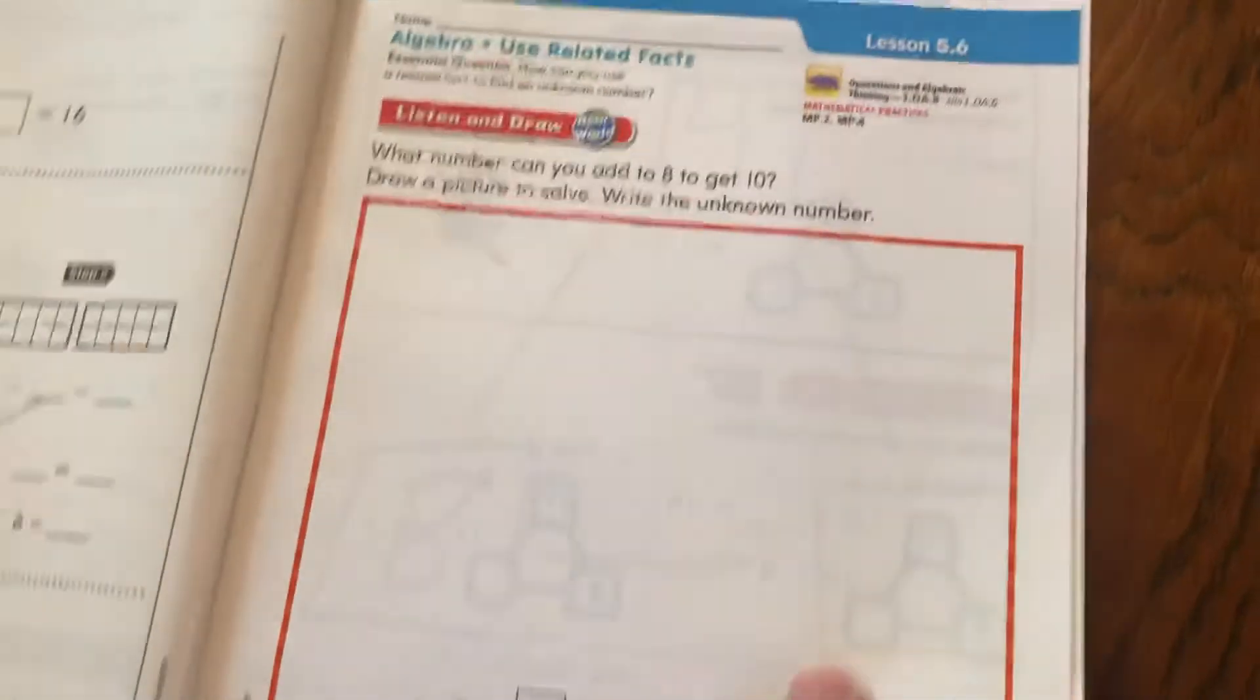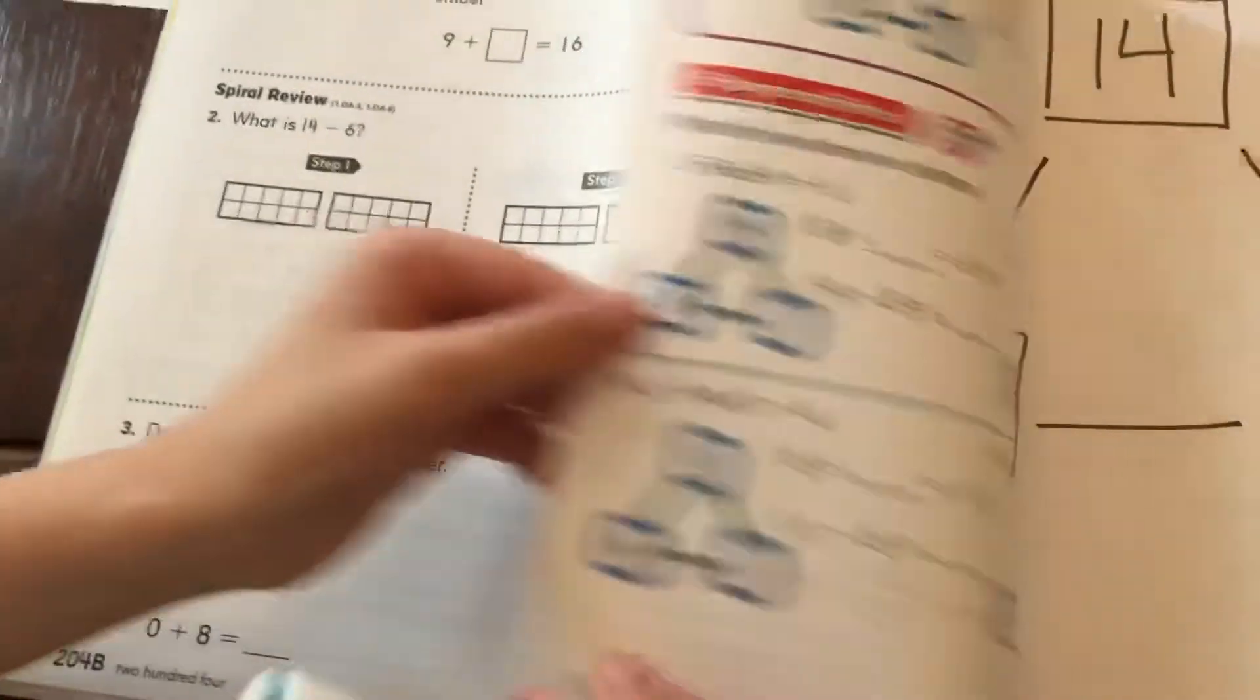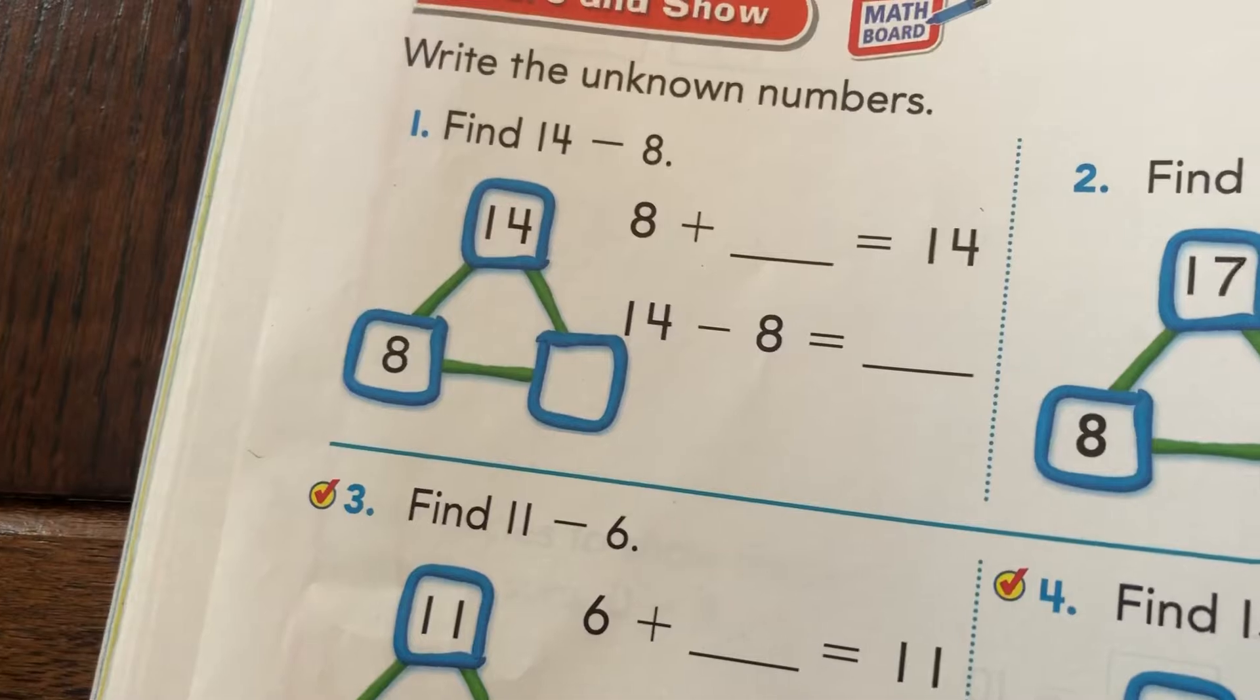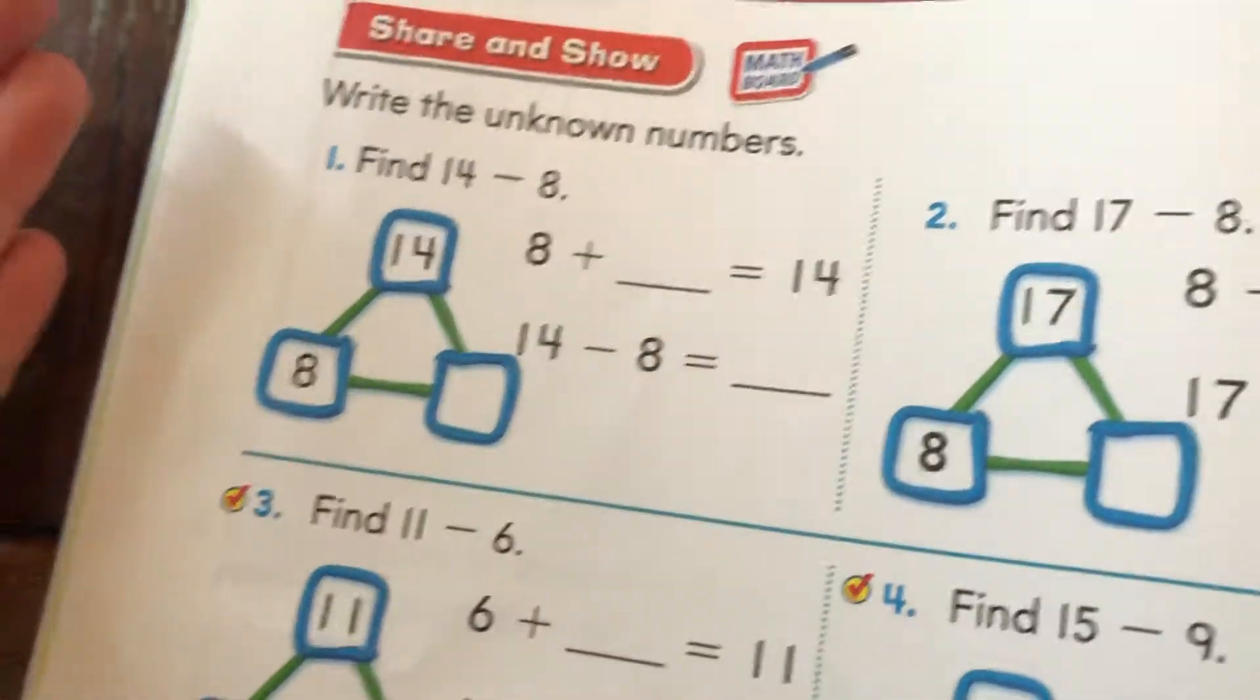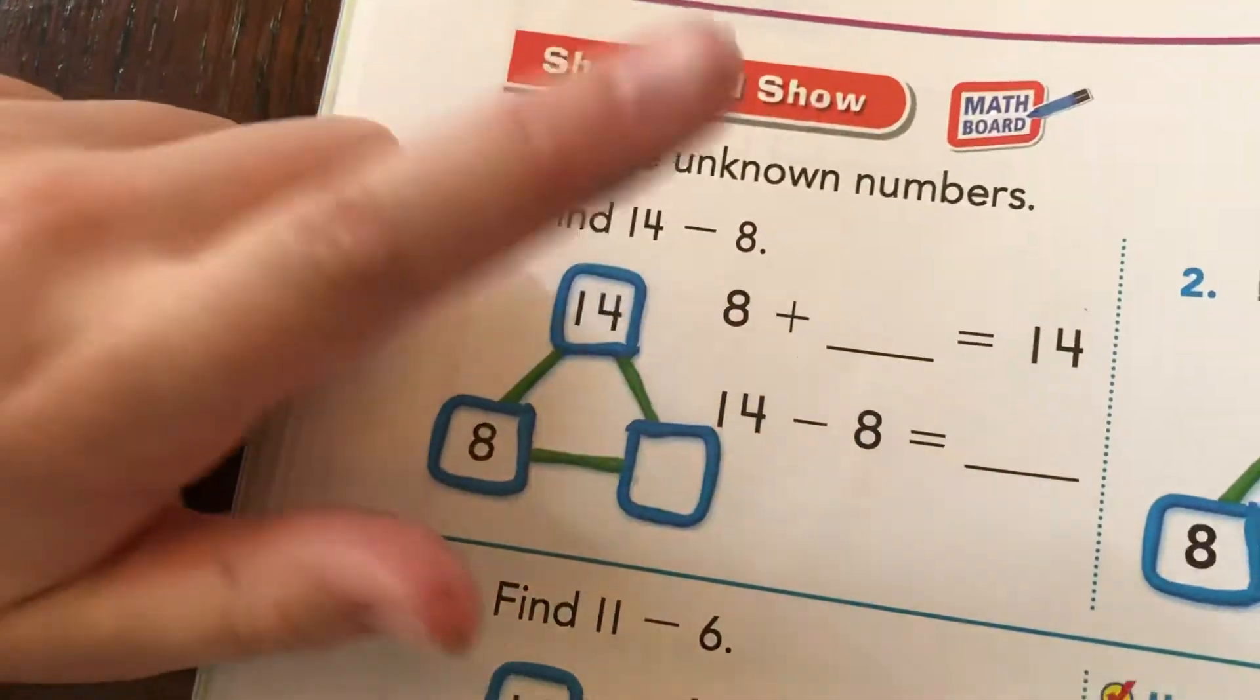But there's another page to this lesson that's very confusing for me because it has a triangle in it. Okay. Let's turn the page to the triangle page. Okay. So this one is actually very much like the double switcheroo. When you open this, you could be a little confused, but you see, find 8 minus, 14 minus 8.